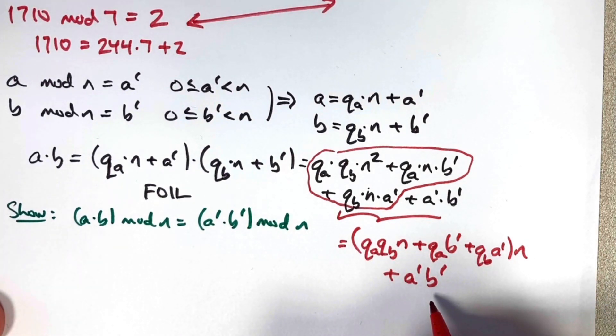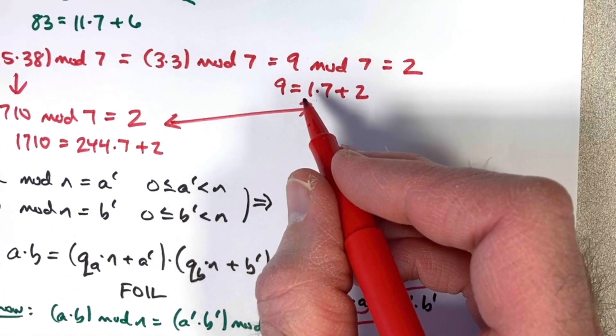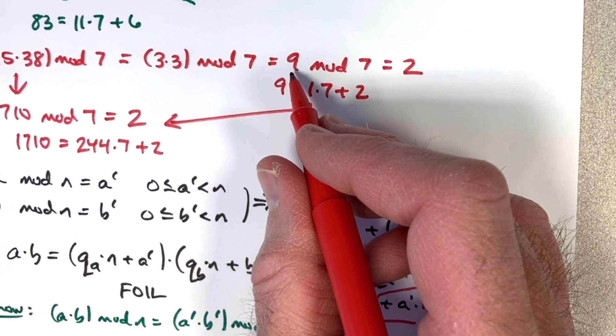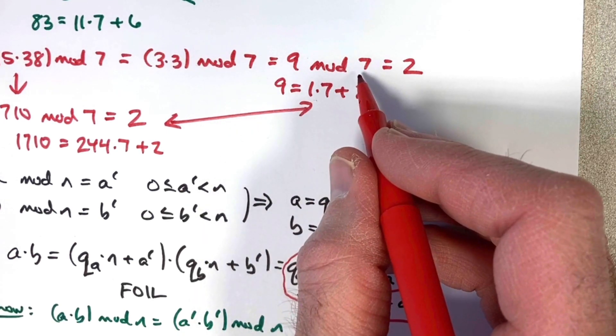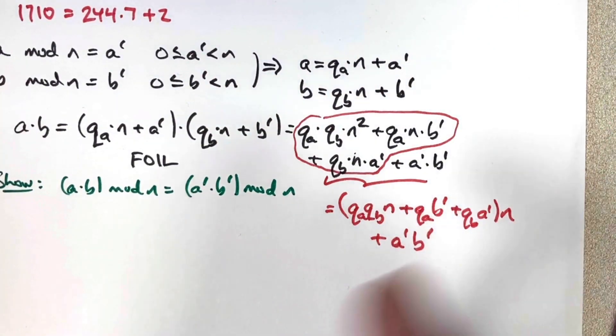Well, it would be the remainder if a prime times b prime happens to be less than n. However, in this example, it wasn't. A prime times b prime was 9. 9 is not less than 7. So we have to be a little bit more careful.